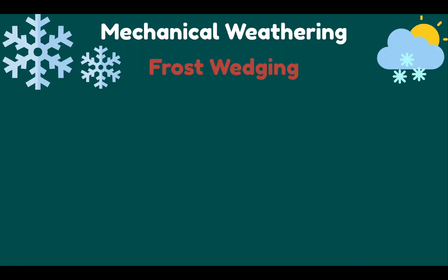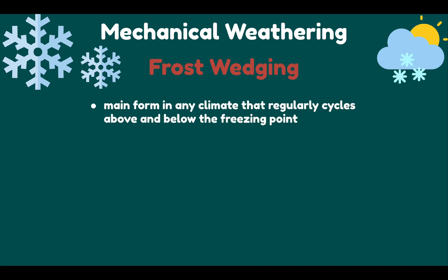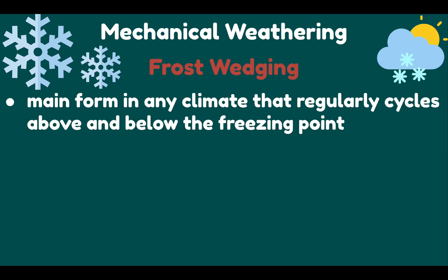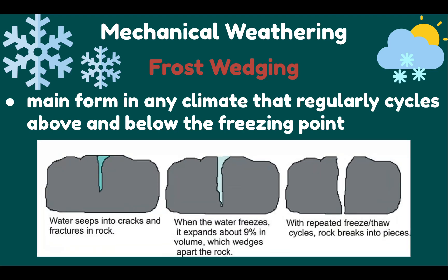Let's start with what we call frost wedging. It is the main form of mechanical weathering in any climate that regularly cycles above and below the freezing point. As you can see in this figure, frost wedging happens when water gets inside the joints, followed by alternate freezing and melting, which then eventually breaks the rock.